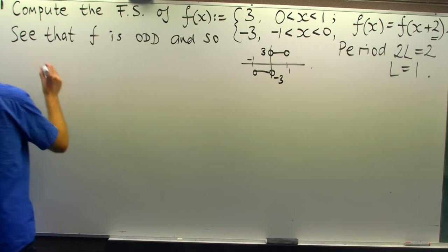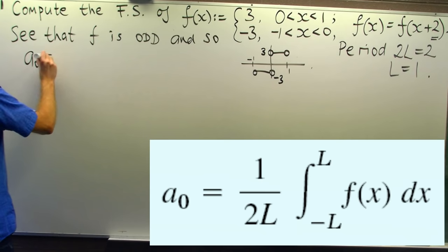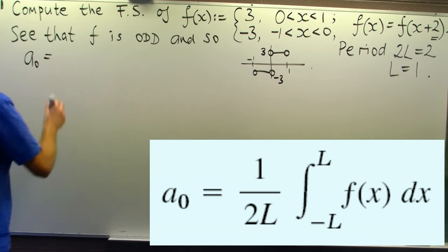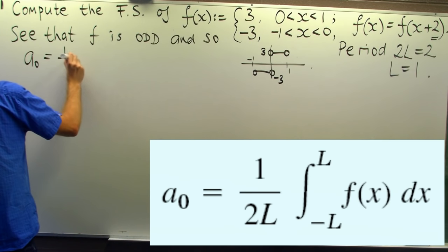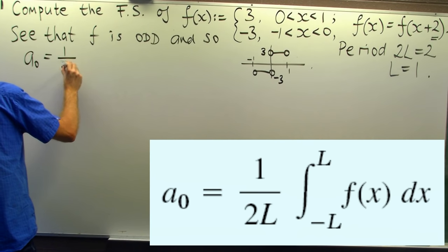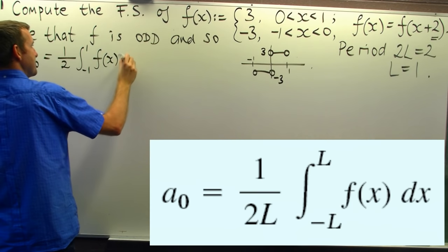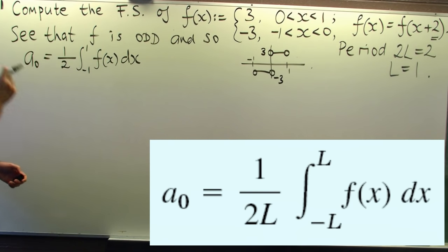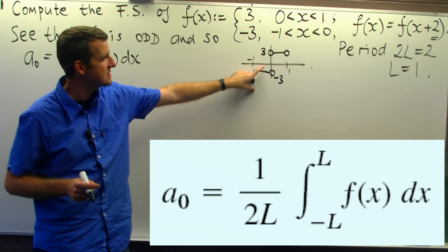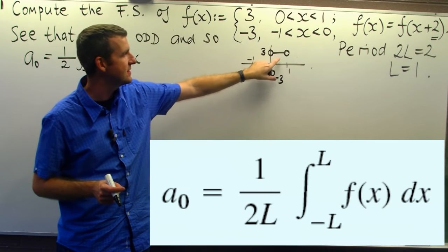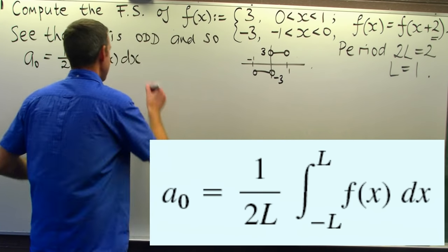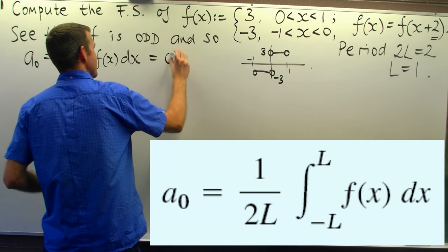And so, the a nought, if you look up the formula for a nought, it's just the following. Here I'm using the formula with big L equals 1. We don't even really need to calculate this integral because it's just the area there which will be negative and there. They're just going to cancel each other out. We get 0.